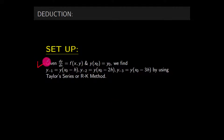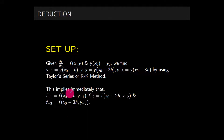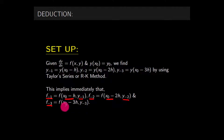The basic setup: you are given an initial value problem dy/dx = f(x,y) with y(x₀) = y₀. We find y₋₁ = y(x₀ - h), y₋₂ = y(x₀ - 2h), y₋₃ = y(x₀ - 3h) using Taylor series or RK method. So in this pattern we will have y₀, y₋₁, y₋₂, y₋₃. This implies f₋₁ = f(x₀ - h, y₋₁), f₋₂ = f(x₀ - 2h, y₋₂), and f₋₃ = f(x₀ - 3h, y₋₃).